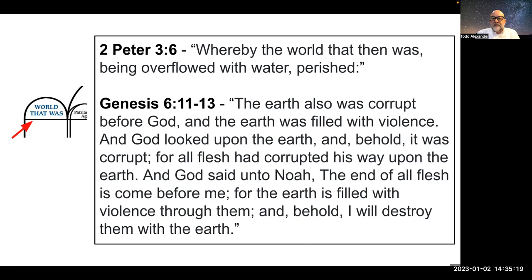We also have a scripture in Genesis chapter 6, which describes the society at the time of this age. Genesis chapter 6, verses 11 through 13: 'The earth also was corrupt before God, and the earth was filled with violence. And God looked upon the earth, and behold, it was corrupt, for all flesh had corrupted his way upon the earth. And God said unto Noah, the end of all flesh has come before me, for the earth is filled with violence through them. And behold, I will destroy them with the earth.'